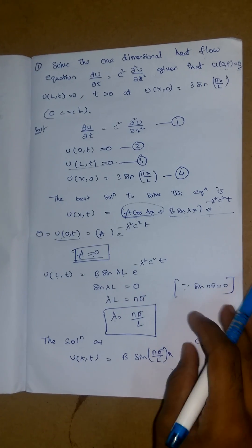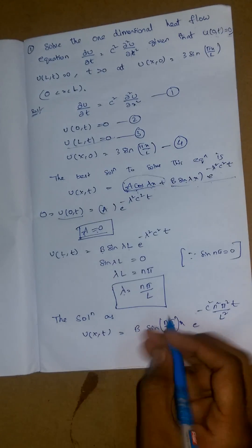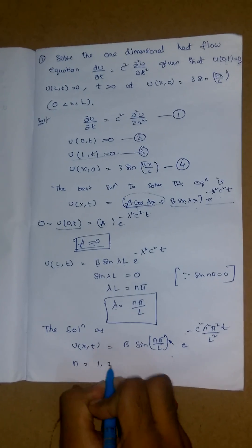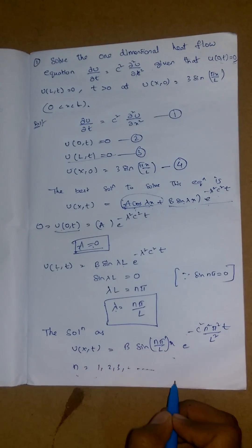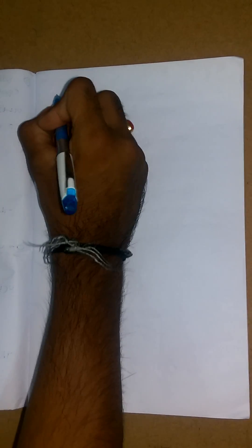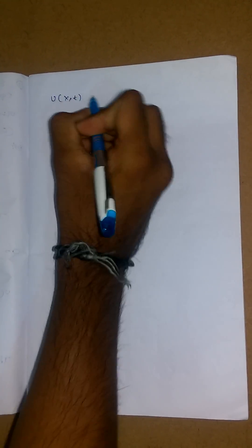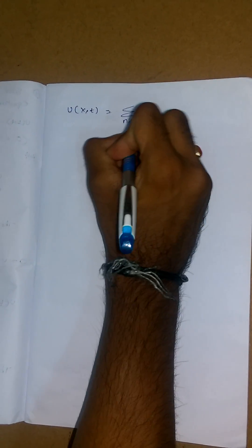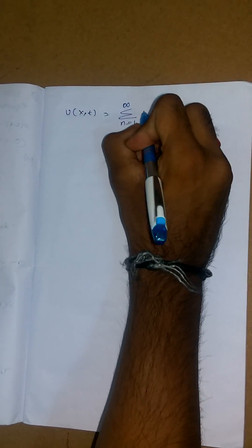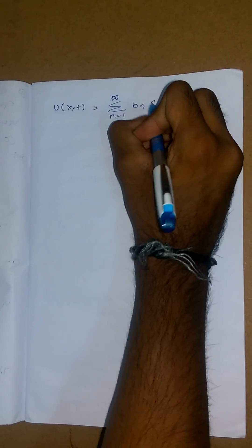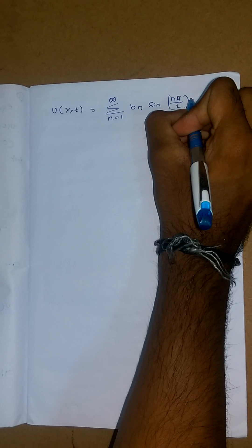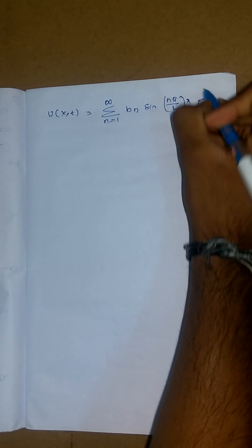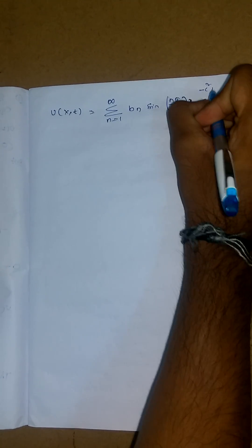Since n takes values 1, 2, 3, and so on, the sum of all such terms also gives a valid solution. So the general solution is written as u(x,t) = Σ (n=1 to ∞) B_n sin(nπx/L) · e^(−c²n²π²t/L²). This is equation (5).